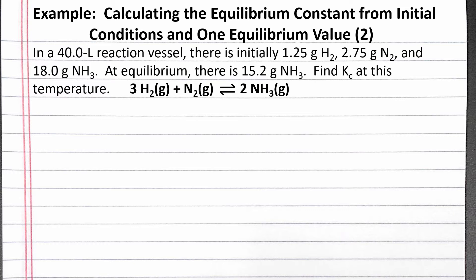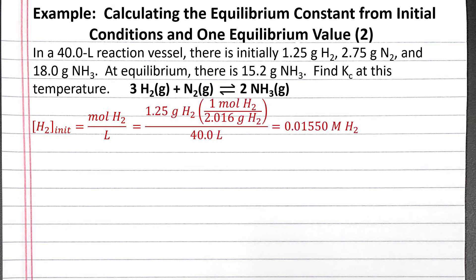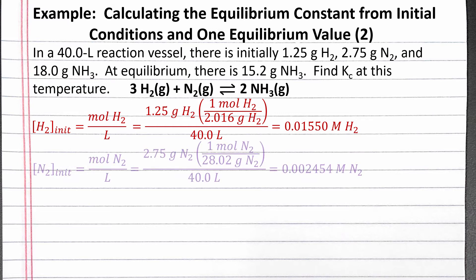Since we want to find Kc, our first step will be to calculate concentrations of gases. The initial concentration of H2 gas is moles of H2 gas over liters. We can convert the mass of H2 gas into moles using its molar mass and then divide by the volume of the reaction vessel. We should get 0.01550 molar hydrogen gas.